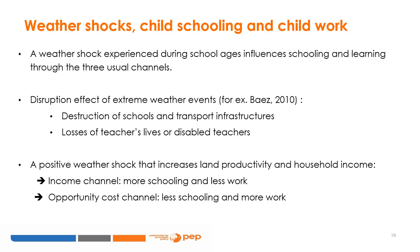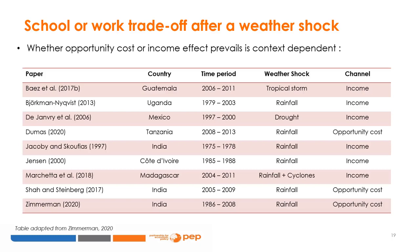In case of an extreme weather event such as a cyclone or flood, schools and transport infrastructures might be destroyed and teachers could be personally affected and unable to teach. Even when the shock does not destroy infrastructures, school attendance might be at risk, particularly in rural areas where income strongly depends on land productivity. We find again the income and opportunity cost channels with opposite effects. For example, with a positive weather shock like higher than usual rainfall, land productivity increases and additional income can be used to pay school direct costs. However, the rise in agricultural wages increases the opportunity cost of attending school, and households could then rely on child work. Which effect prevails depends on the context and the degree of imperfection of savings, credit, insurance, and labor markets.